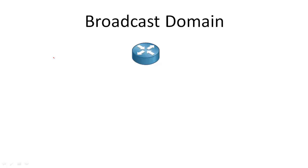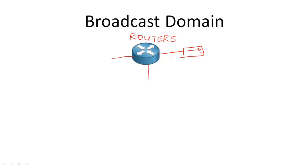In fact, what are called networks these days are just broadcast domains. So if you have two computers on a network, it usually means they are on the same broadcast domain. In order to segment broadcast domains, routers were created. While switches segment collision domains, routers are used to segment broadcast domains. A router's interfaces are each connected to different networks, meaning they are connected to different broadcast domains.